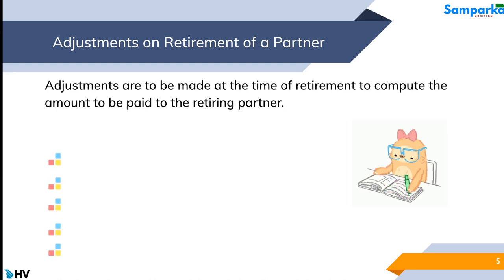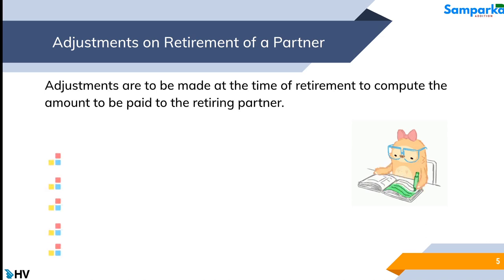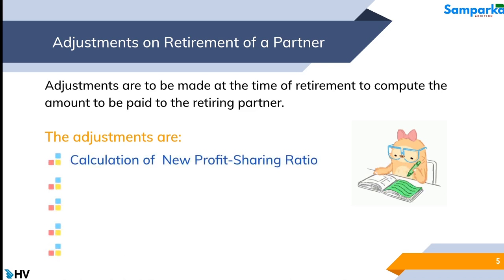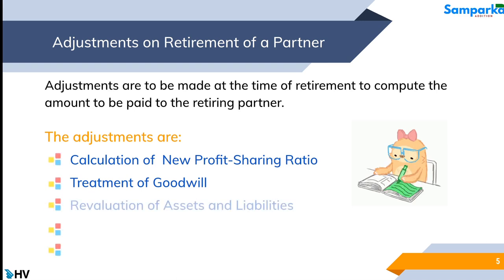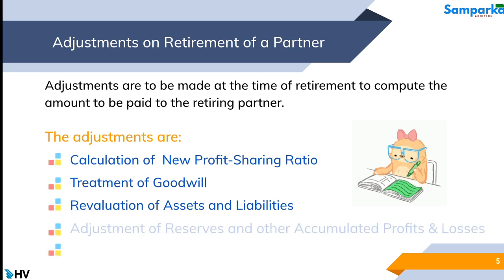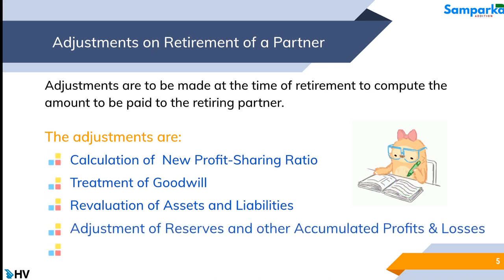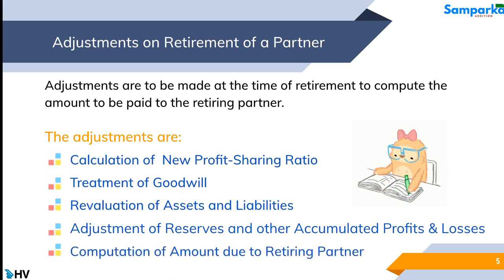Adjustments on retirement of a partner: Adjustments are to be made at the time of retirement to compute the amount to be paid to the retiring partner. The adjustments are: calculation of new profit sharing ratio, treatment of goodwill, revaluation of assets and liabilities, adjustment of reserves and other accumulated profits and losses, and computation of amount due to the retiring partner.